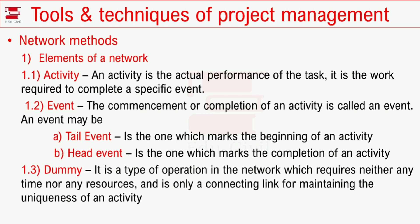The head event is the end of the activity. The tail event is where the activity starts. The arrow is called Head, and the tail of the arrow is called Tail. The tail event marks the beginning of an activity, and the head event marks the completion of an activity.